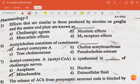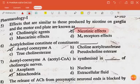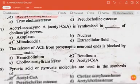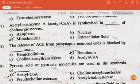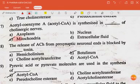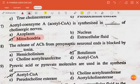Effects that are similar to those produced by nicotine on ganglia and the motor end plate are known as nicotinic effects. Acetylcholine is constituted of acetyl coenzyme A. The next question: acetyl coenzyme A is synthesized in the mitochondria of cholinergic nerve.